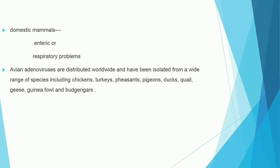In domestic mammals, adenovirus may cause enteric and respiratory problems. Avian adenoviruses are distributed worldwide and have been isolated from a wide range of species including chickens, turkeys, pheasants, pigeons, ducks, quail, geese, guinea fowls, and budgerigars.